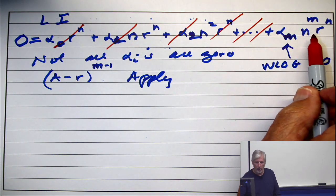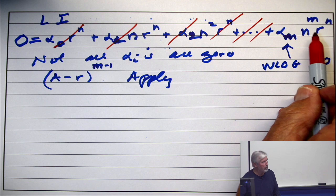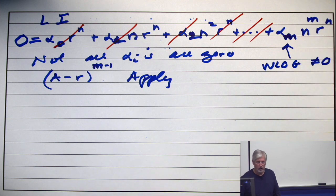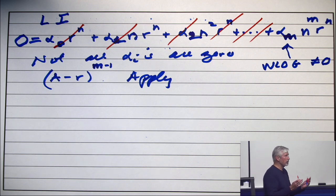But when you apply A minus r to that, you won't kill them. You'll get a constant times r to the n, and the constant won't be 0. So you'll have 0 is a non-zero constant times r to the n. That's not true.